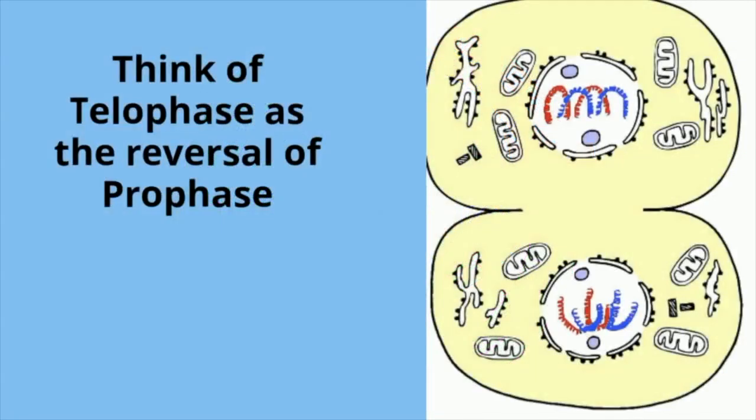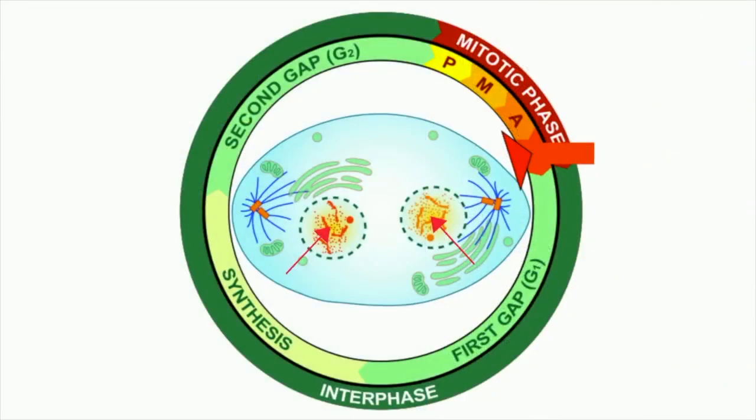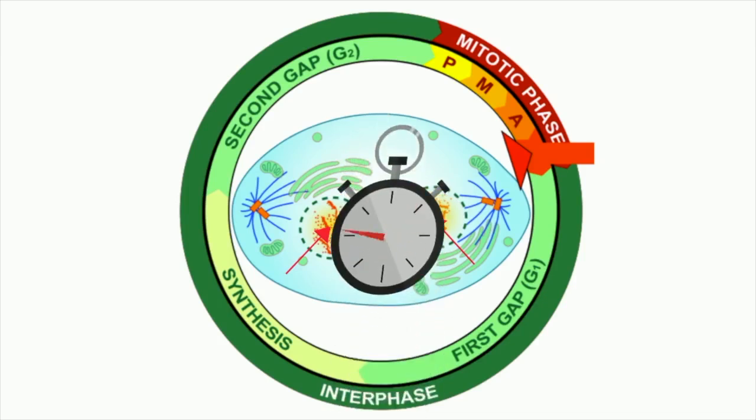You might think of the events of telophase as the reversal of the events that occur during prophase. Now that the two set of daughter's chromosomes are encased in a new nuclear envelope, they begin to spread out again. When this occurs, it is the end of telophase, and mitosis is now complete. Telophase takes roughly an hour to complete.